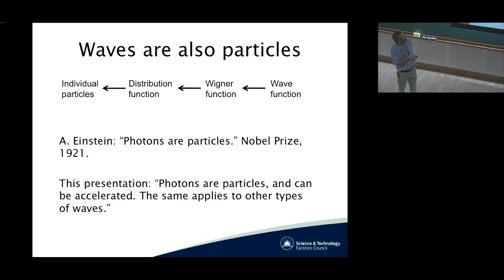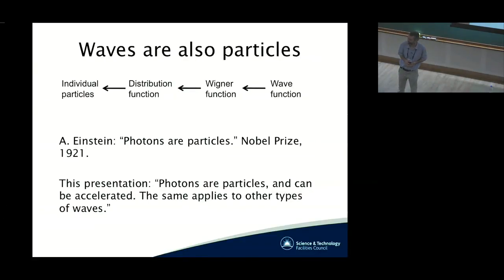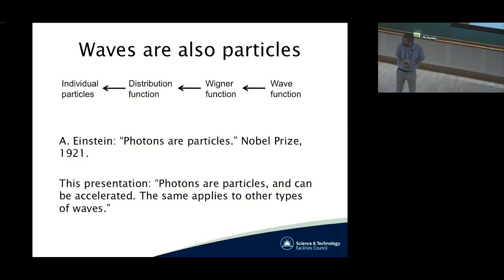Of course, you can do that chain in the opposite direction. You can start with a wave function, take the Wigner function corresponding to that wave, and convert that to a distribution function. And then you can see that in certain ways, photons can be treated as individual particles — for example, Albert Einstein's photoelectric effect. Photons can be treated as particles; in certain ways they behave as particles.